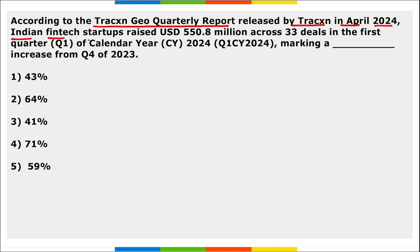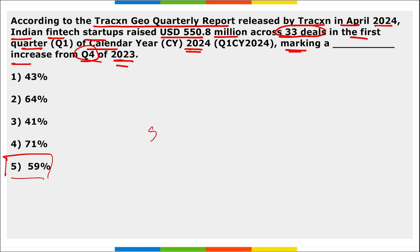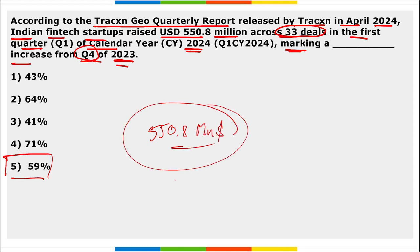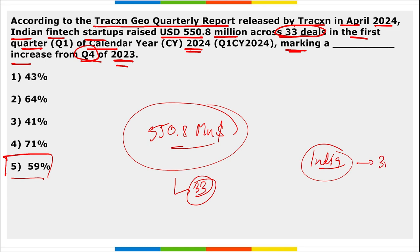According to the Tracxn Geo Quarterly Report released in April 2024, Indian fintech startups raised 550.8 million dollars across 33 deals in the first quarter of calendar year 2024, marking a 59 percent increase from the fourth quarter of 2023. India is ranked third in terms of fintech funding, behind the USA and China.